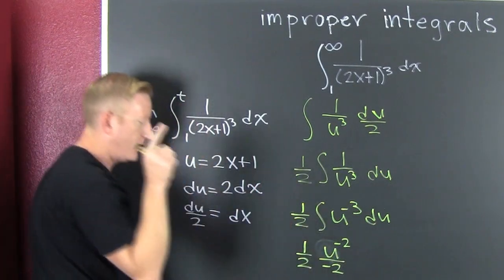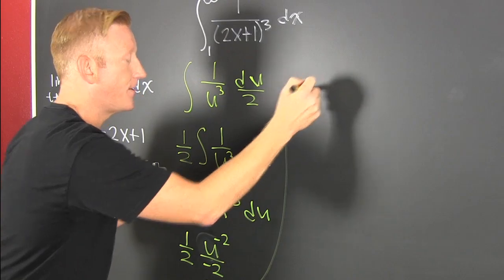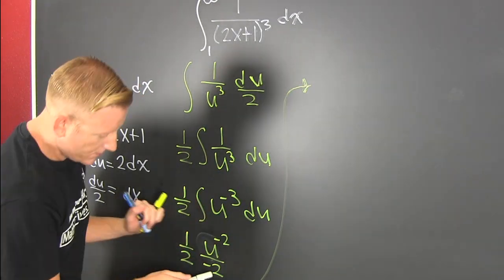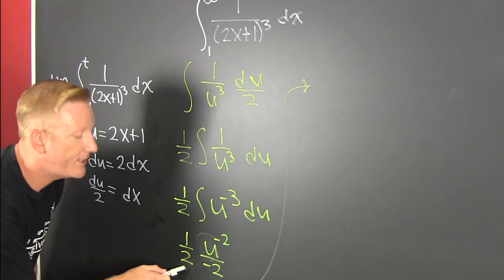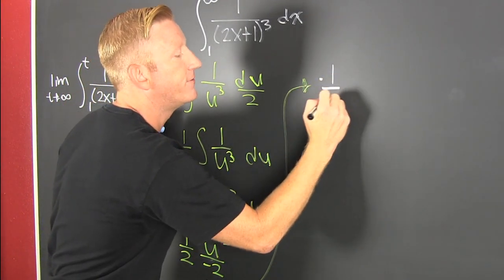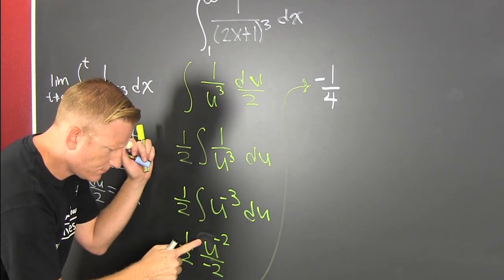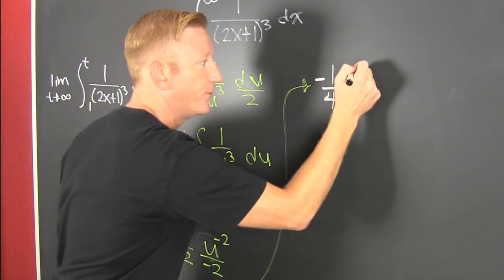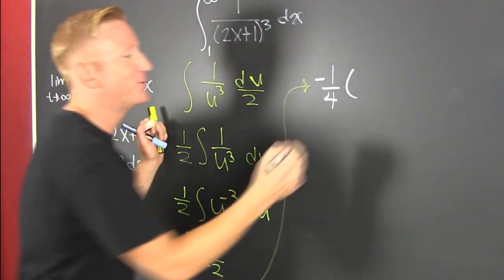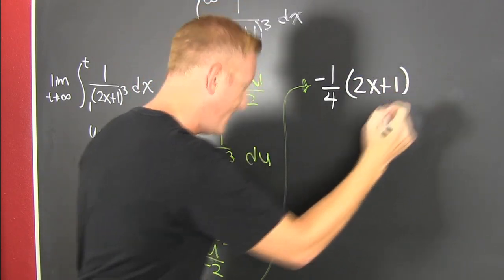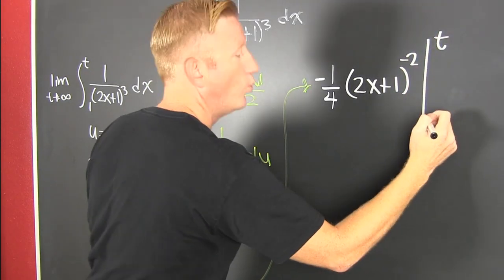Now we're going to back sub all of that business with our limits. So 2 times 2 is 4, so I'm going to call that minus 1 fourth. u to the minus 2 - what was my u? 2x plus 1. So 2x plus 1 to the minus 2 power. And then we're going to evaluate that from 1 to t. This video is going to get trolled so hard, and that's okay. You guys need something to do.